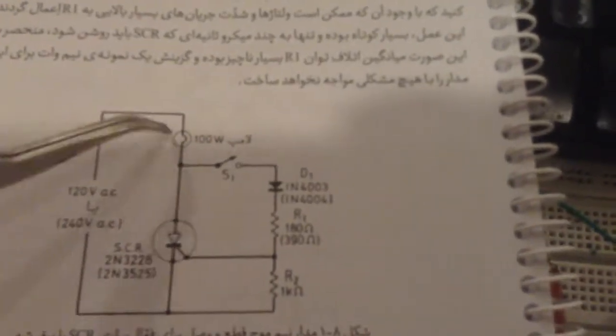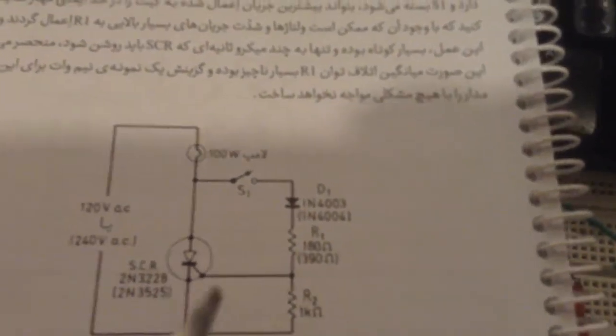1k to cathode and anode over diode connecting to 390 ohm resistance.